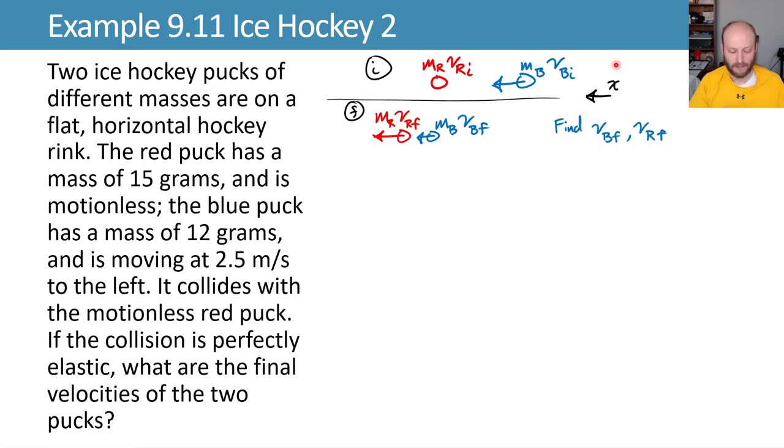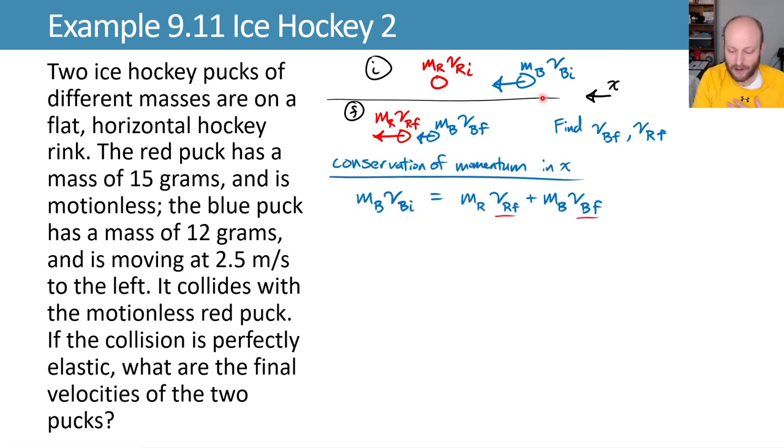That's two unknowns. We can write our conservation of momentum expression in our x direction as before. The initial momentum, mb vbi, plus this but this is zero, it's not moving, so just mb vbi is equal to my final momentum of my system. Because we have two parts of our system, we include both of those: mr vrf and mb vbf.